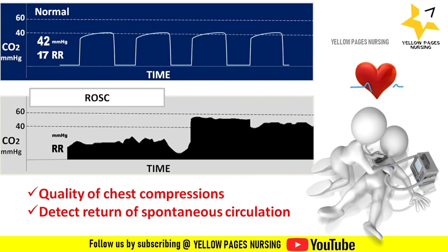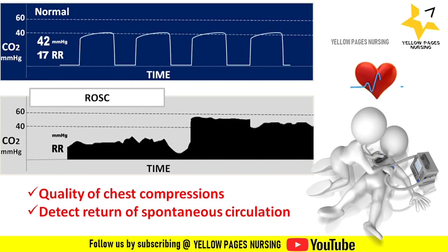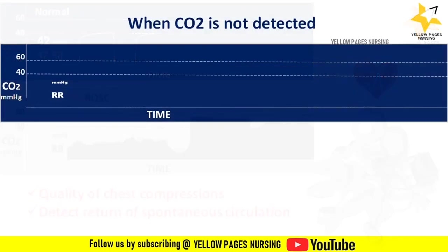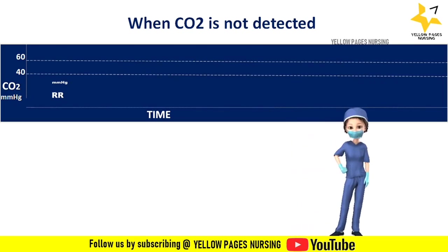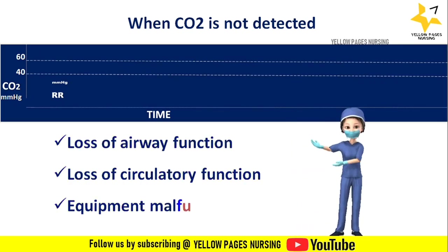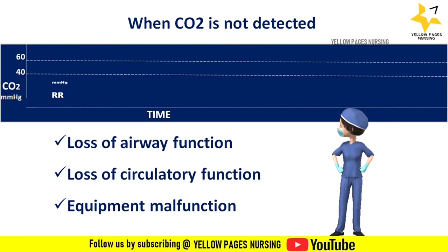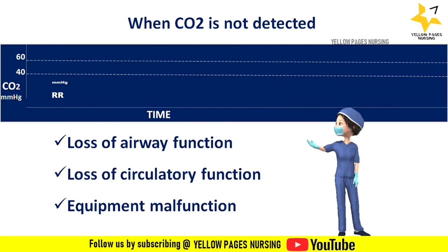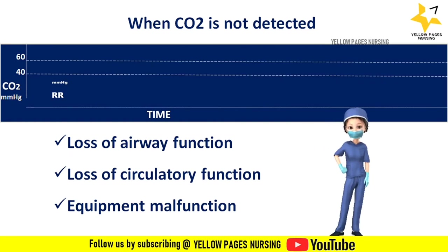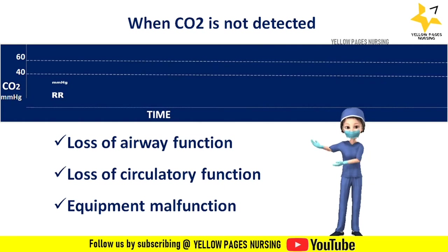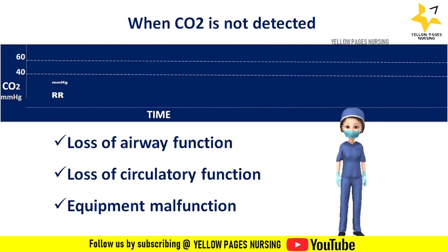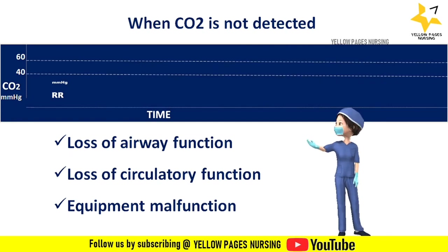When CO2 is not detected, three factors must be quickly evaluated for possible causes: loss of airway function, loss of circulatory function, and equipment malfunction. Loss of airway function may be due to airway obstruction or apnea. Loss of circulatory function may be due to massive pulmonary embolism or cardiac arrest. Equipment malfunction may be due to improper mask seal or tube placement.